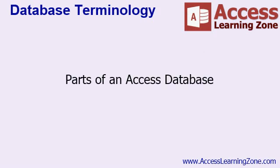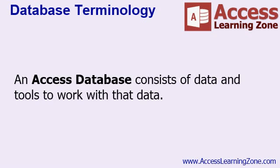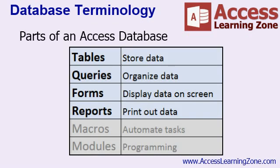Now that we know what a database is, and what the benefits of using a Microsoft Access database are, let's talk about the parts of an Access database. An Access database consists of data and the tools to work with that data. These tools are tables, queries, forms, reports, and optionally macros and modules.